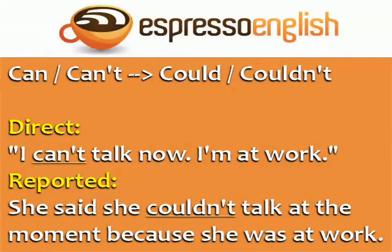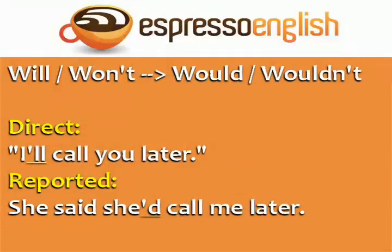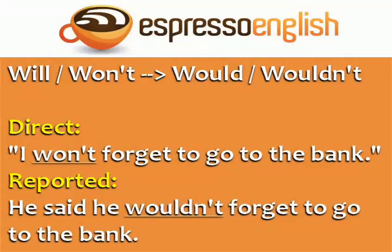Reported: She said she couldn't talk at the moment because she was at work. Statements with will and won't become would and wouldn't. Direct: "I'll call you later." Reported: She said she'd call me later. Direct: "I won't forget to go to the bank." Reported: He said he wouldn't forget to go to the bank.